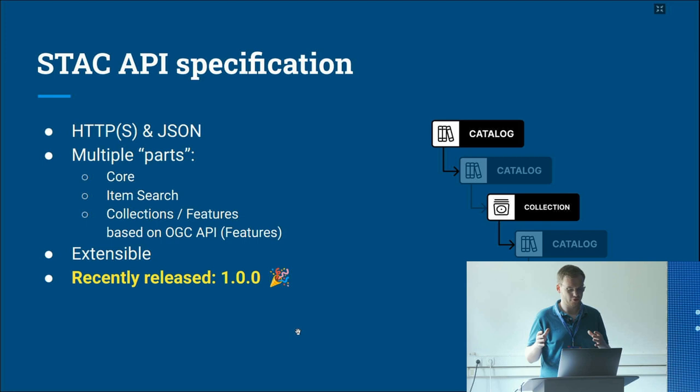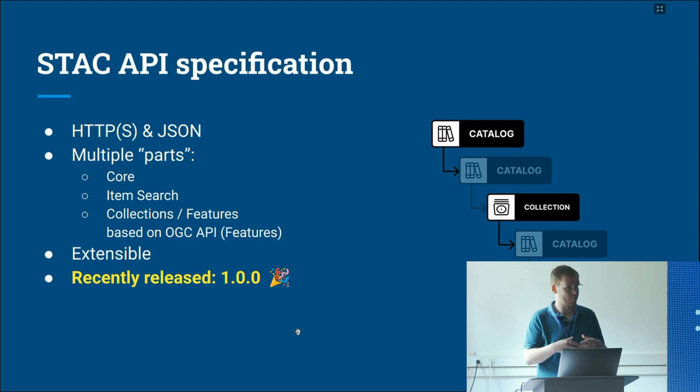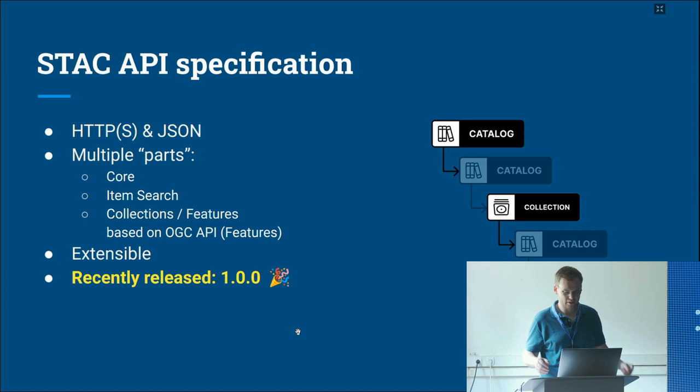Collections and features are built on top of OGC API Features. When migrating from a static structure to an API structure, catalogues get removed — you just have a root catalogue linking to collections, with items underneath that you can search via the API interface.